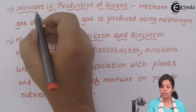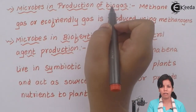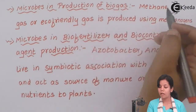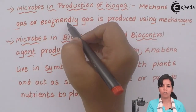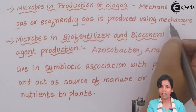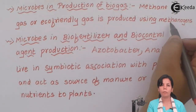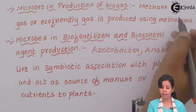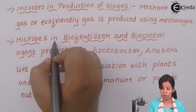The next topic is microorganisms in the production of biogas, or what we call in normal language gober gas. Methane gas, an eco-friendly gas, is produced using methanogens — good bacteria naturally present in cow dung — which is used to make gober gas in biogas plants in villages, and is cheap and easily available.